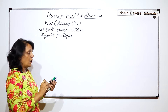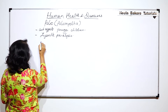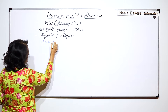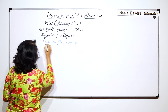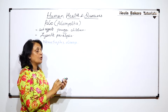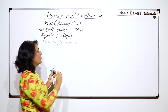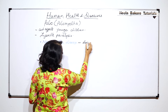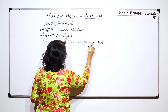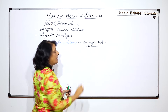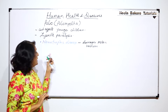This polio or poliomyelitis is a neurotropic disease. Neurotropic disease is the term given when the disease results in damage to motor neurons - especially of the spinal cord. We will talk about this in a minute.